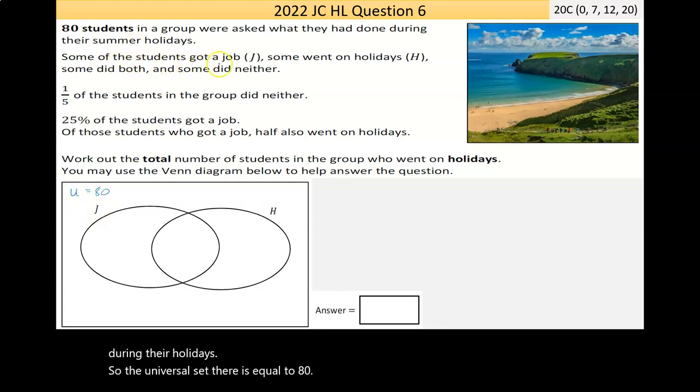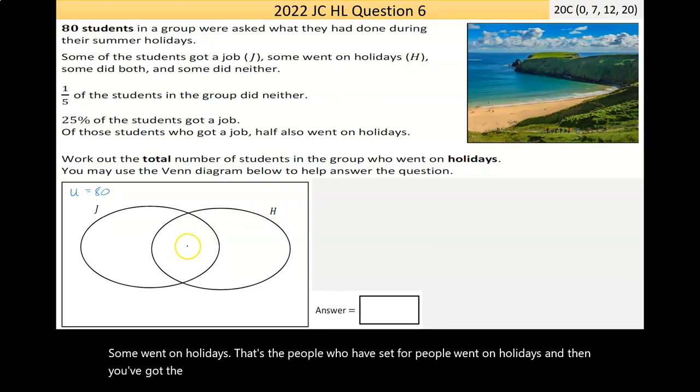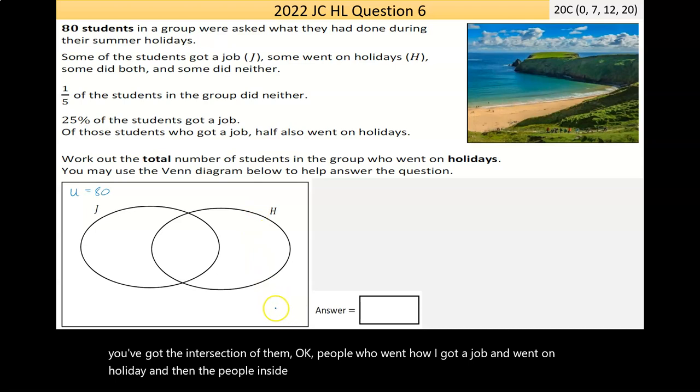Now it says some of the students got a job, so that's the set J for job. Some went on holidays, that's the set for people who went on holidays. And then you've got the intersection of them, people who got a job and went on holiday. And then the people who didn't get a job, didn't go on holiday.